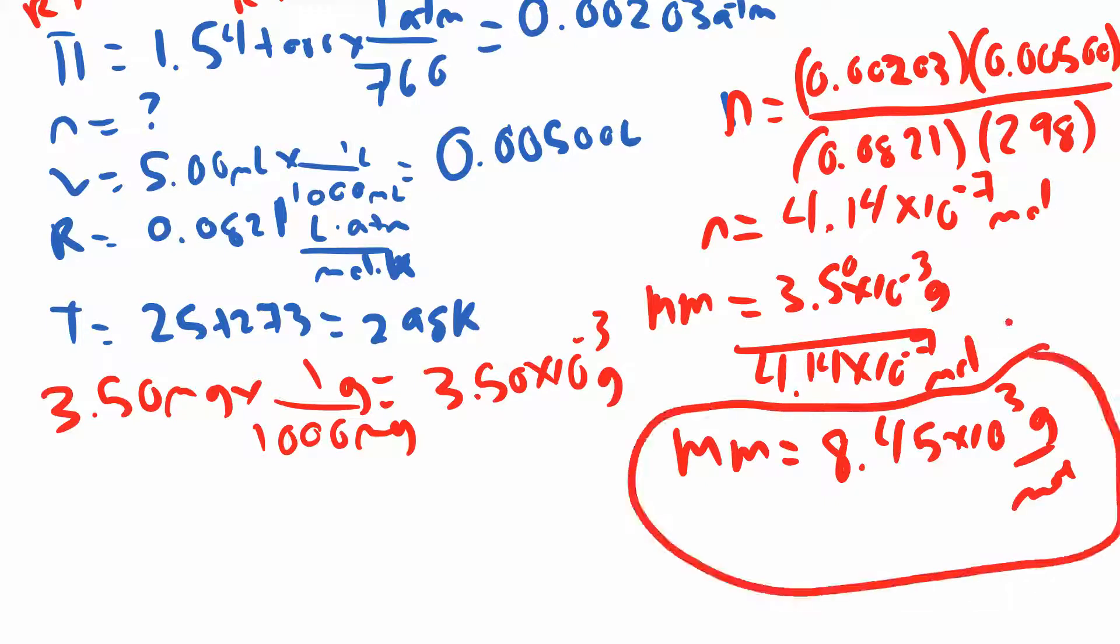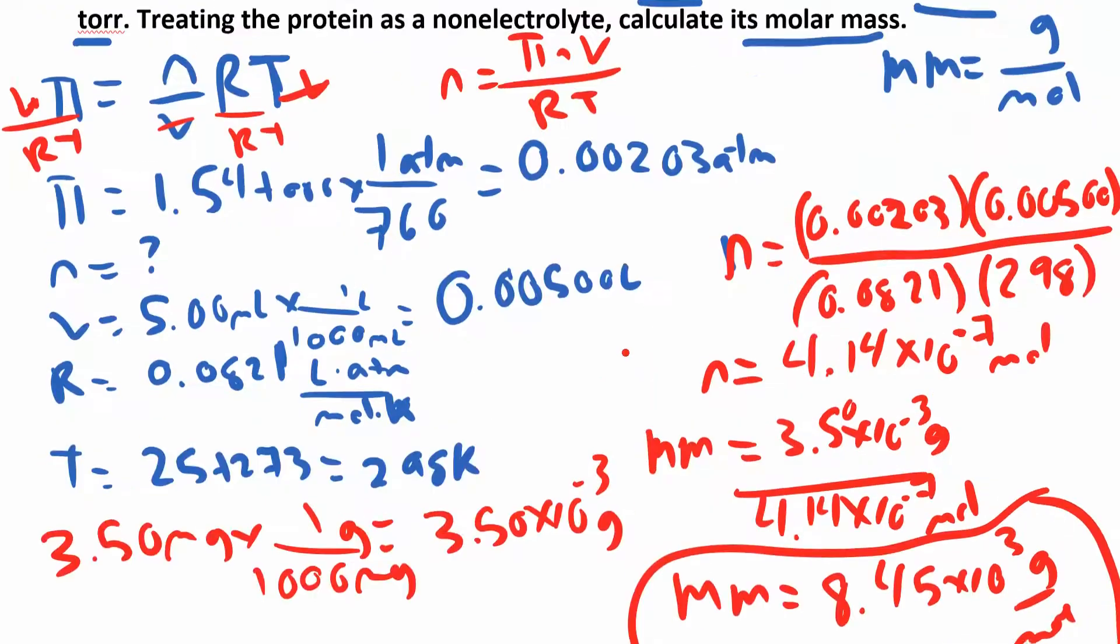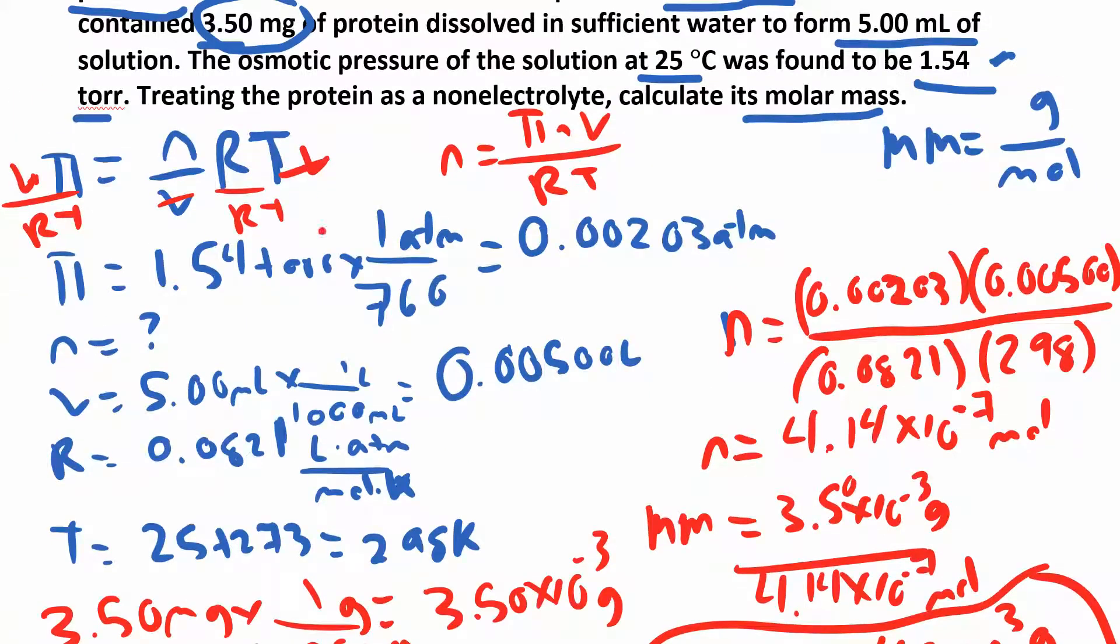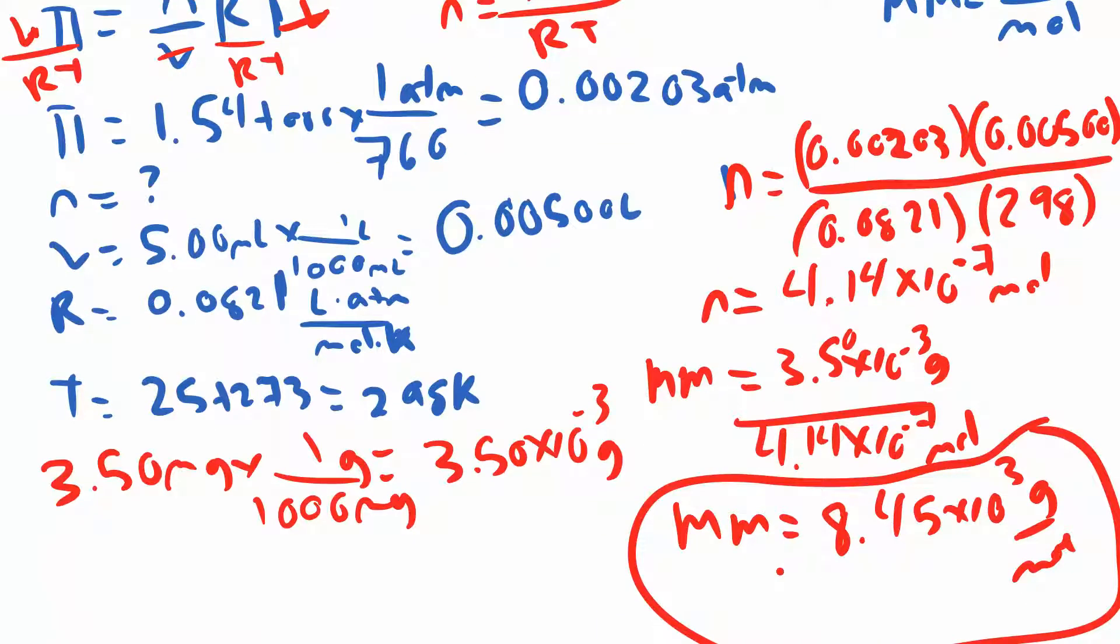What did we do? We plugged into π = (n/v)RT. Be careful with units: make sure pressure is in atmospheres, volumes in liters, temperatures in kelvin. When you find molar mass starting with milligrams, make sure you convert to grams. Grams per mole is molar mass.